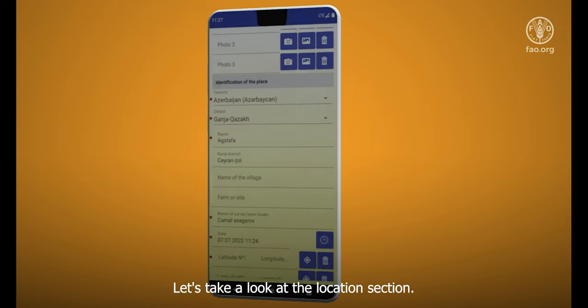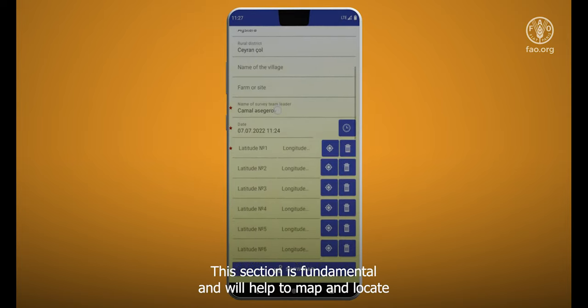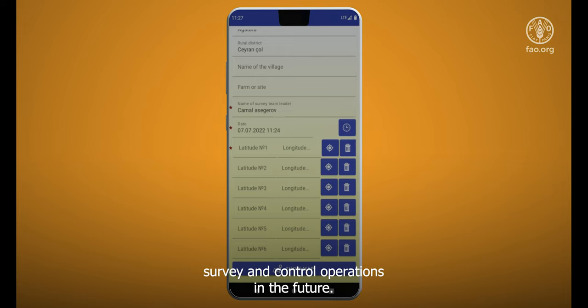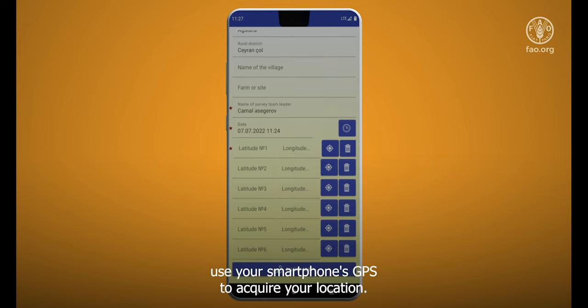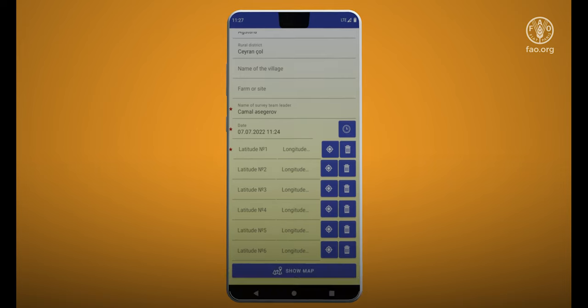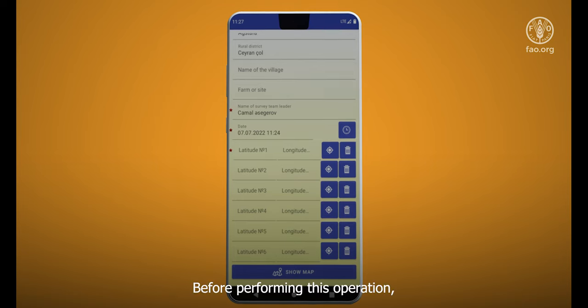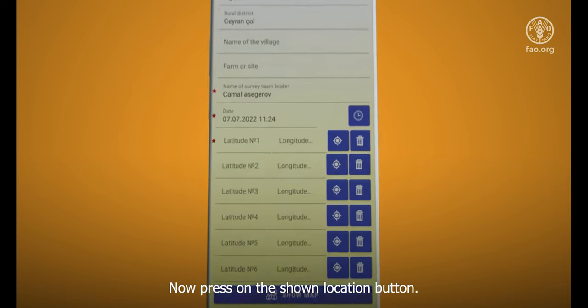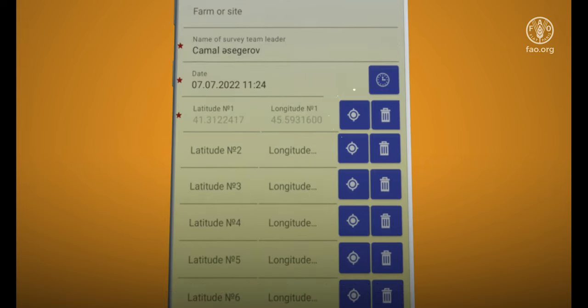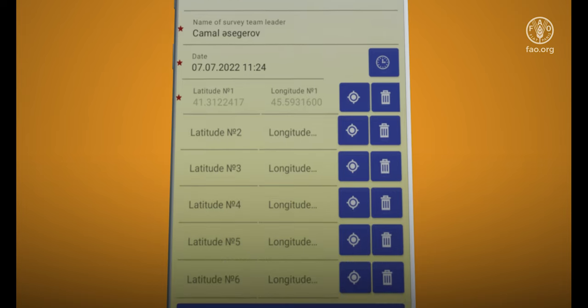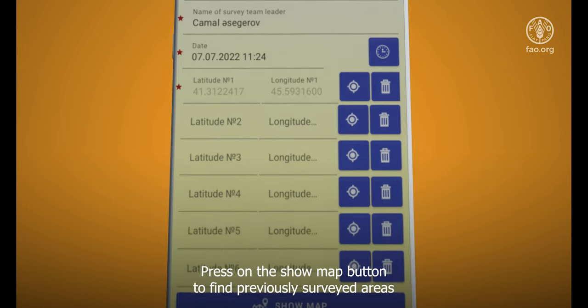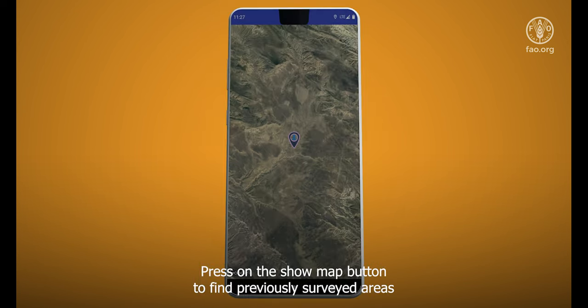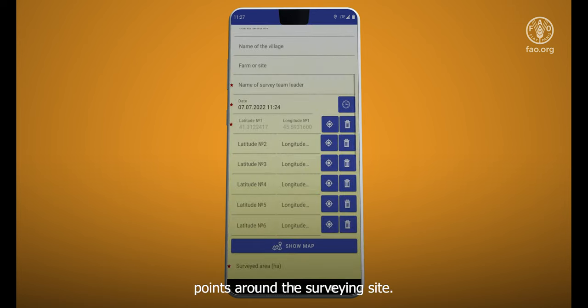Let's take a look at the location section. This section is fundamental and will help to map and locate survey and control operations in the future. To add a location, use your smartphone's GPS to acquire your location. Before performing this operation, please ensure that your GPS is active on your smartphone. Now press on the shown location button. This will autofill the location section. Press on the shown map button to find previously surveyed areas or calculate the area if there are more than three GPS points around the surveying site.